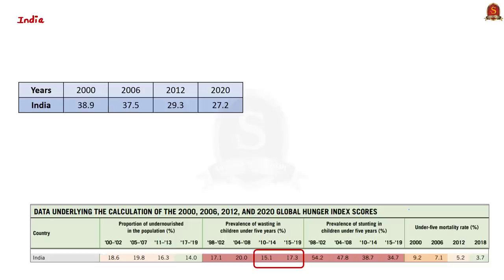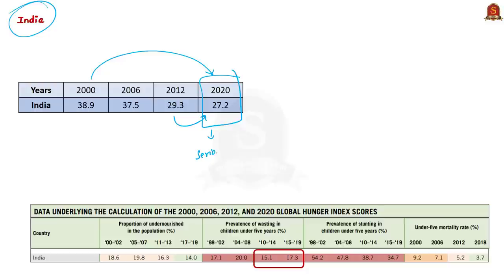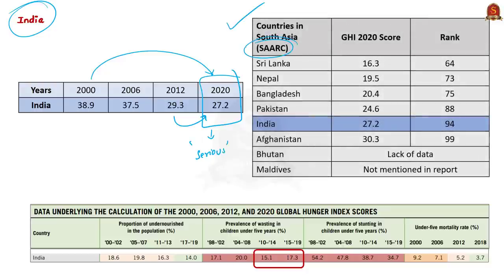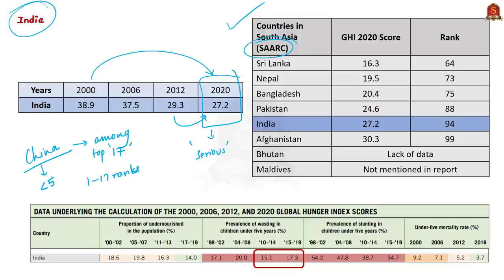Coming to India — this year India has scored 27.2. While India has improved significantly from earlier on the 2020 scale, the progress from 2012 is marginal. India is in the serious category on the severity scale. We have given the comparison of India's standing with our neighbors in South Asia for reference. Some may say India is bound to have such a score because of its huge population. However, this perception is negated by the fact that China, being the most populous country, is placed among the top 17 countries collectively ranked 1st to 17th, and China scored less than 5. India's performance in the last 5 years has improved compared to 2010–2014 in all indicators except child wasting, so special focus must be given to child wasting.